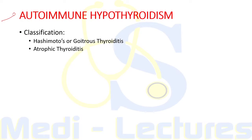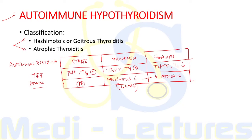Autoimmune hypothyroidism is classified into two types: Hashimoto's or goitrous thyroiditis, which is associated with goiter, and atrophic thyroiditis, seen at later stages when only minimal thyroid tissue remains. When autoimmune destruction just begins, TSH and T4 are both normal and the gland is also normal. As destruction progresses, TSH starts increasing and this increased TSH is able to maintain normal T4 levels.